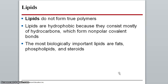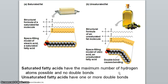The next group is lipids. Lipids are not true polymers and are very hydrophobic — they don't like to be around water due to how non-polar they are. The types we'll look at are fats, phospholipids, and steroids. Looking at fatty acids, we have saturated and unsaturated fatty acids. The long hydrocarbon chain is very non-polar. Unsaturated fatty acids have a double bond causing a kink, which prevents tight packing, making them liquid at room temperature, unlike saturated ones which are usually solid.